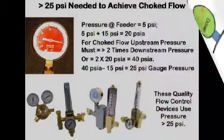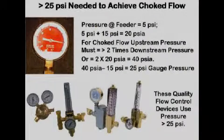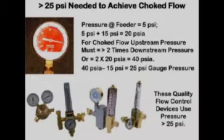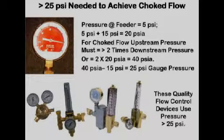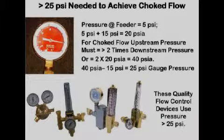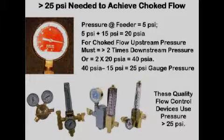Calculating choke flow rates uses a very simple equation where K is a constant depending on the gas used. In the MIG welding situation, assuming an average 5 PSI needed at the feeder to flow 30 to 35 CFH, absolute pressure is 5 plus 15, or 20 PSI absolute. Twice that — 40 PSI absolute — is needed upstream to have choke flow. Subtracting 15 to get back to gauge pressure gives 25 PSI. Quality flow meters and flow gauges use pressures ranging from a minimum of 25 up to 80 PSI.